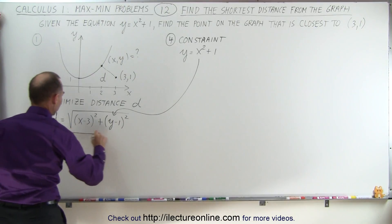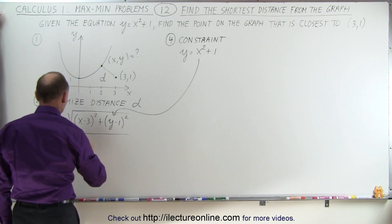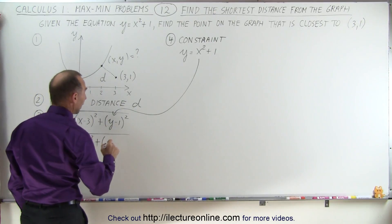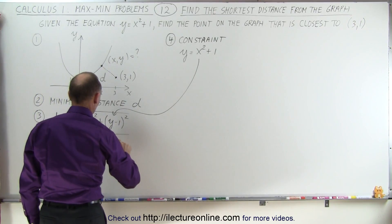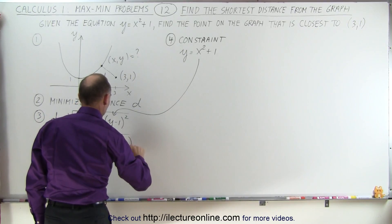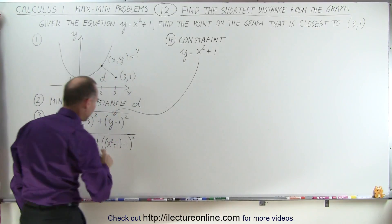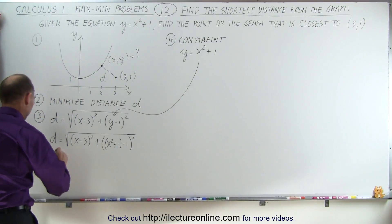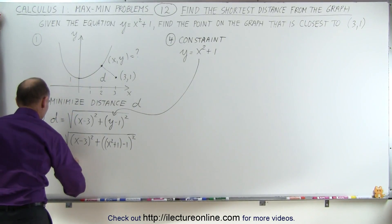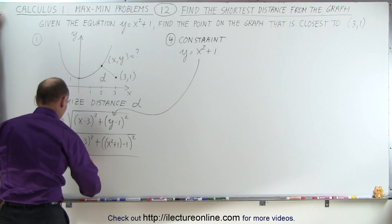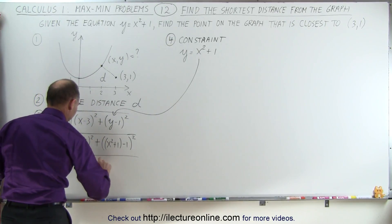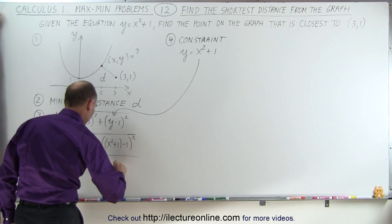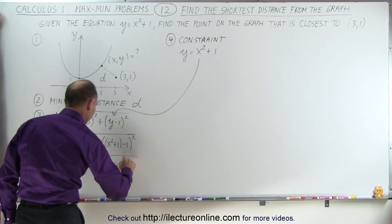Now we'll have an equation with only one variable, x. So d is equal to the square root of x minus 3 squared plus, instead of y, we write x squared plus 1, minus 1, quantity squared. Expanding this out, we get d equals the square root of x squared minus 6x plus 9 — and the ones cancel — plus x to the fourth power.